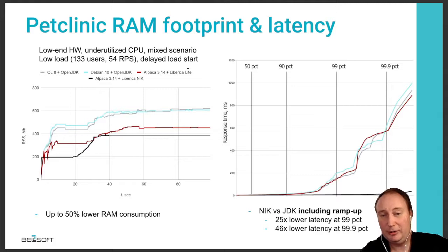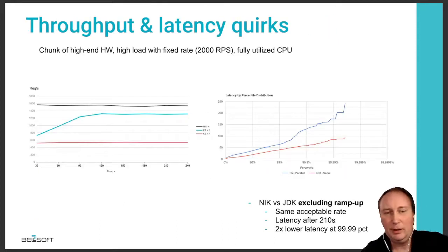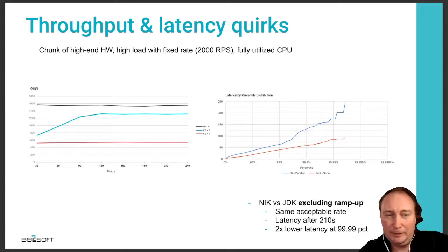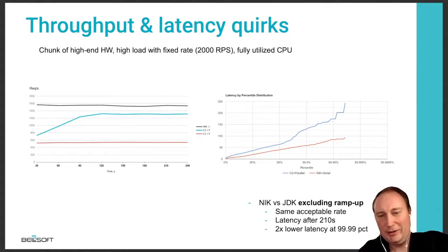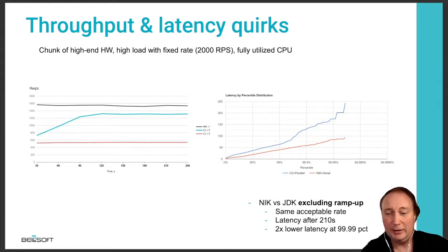We can also use native images in some cases, which provides great benefits like latency reduction. The right plot shows that at some point the JDK becomes saturated by requests and can't process them at such high rates. If we lower the request rates so all variants perform properly, we can still process all incoming requests — but the latency will differ. In some cases, native image behaves much better than the classical JVM.